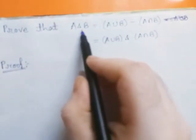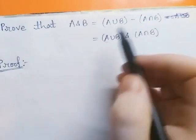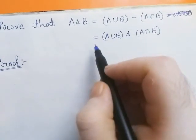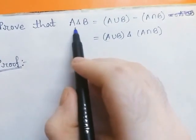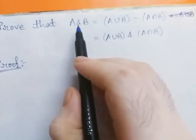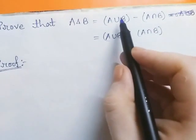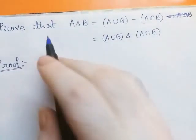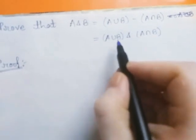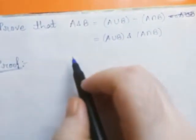We will prove that A Δ B equals (A ∪ B) minus (A ∩ B), which also equals (A ∪ B) Δ (A ∩ B). That is, the symmetric difference of two sets A and B can be written as A ∪ B minus A ∩ B, and also as the symmetric difference of (A ∪ B) and (A ∩ B).